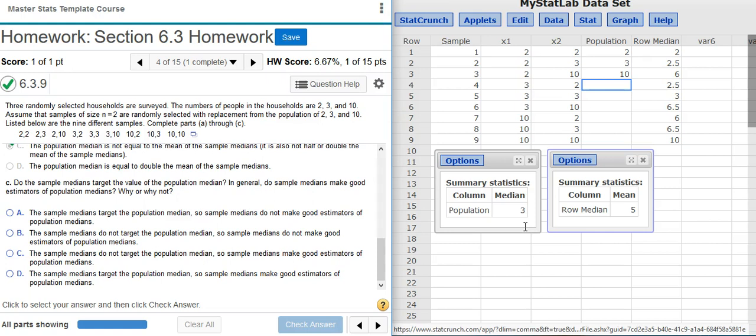What you need to look at is what's the statistic that you're calculating, and is that a biased or unbiased estimator? Here we're calculating the median. Medians are biased estimators. They tend not to target the population from the sample.